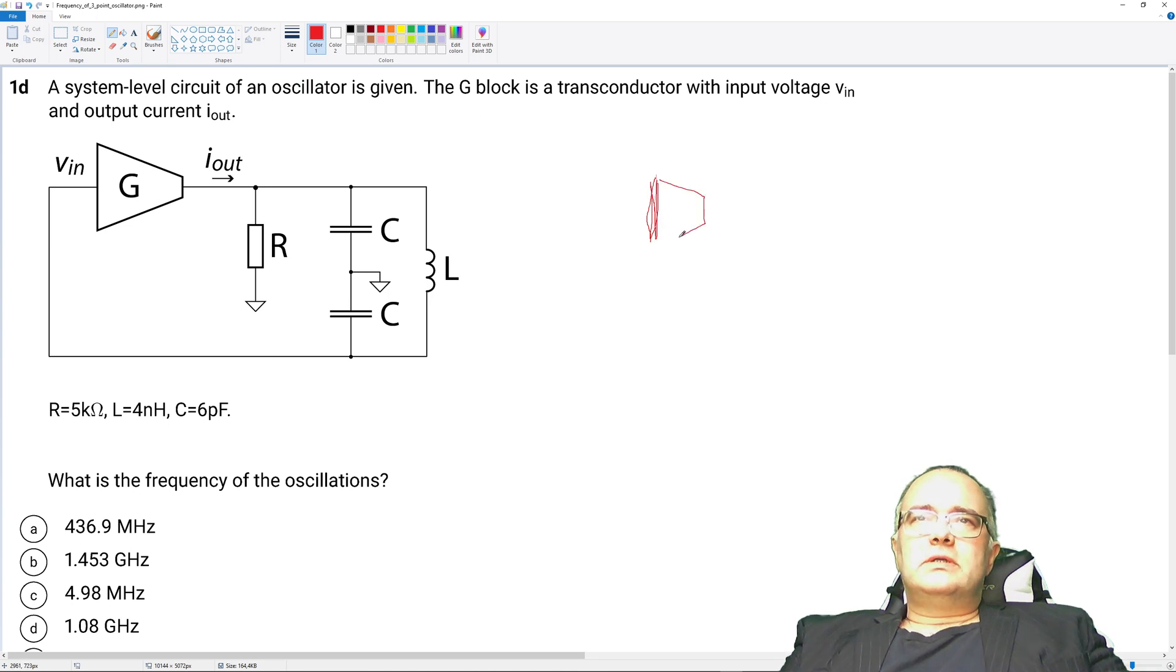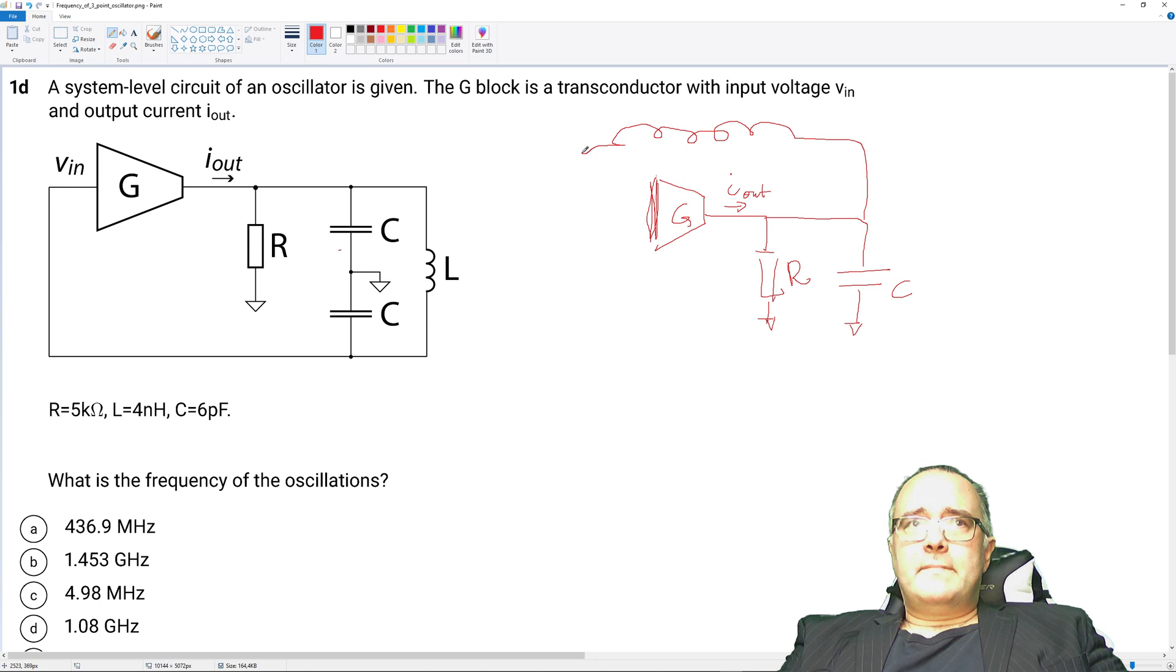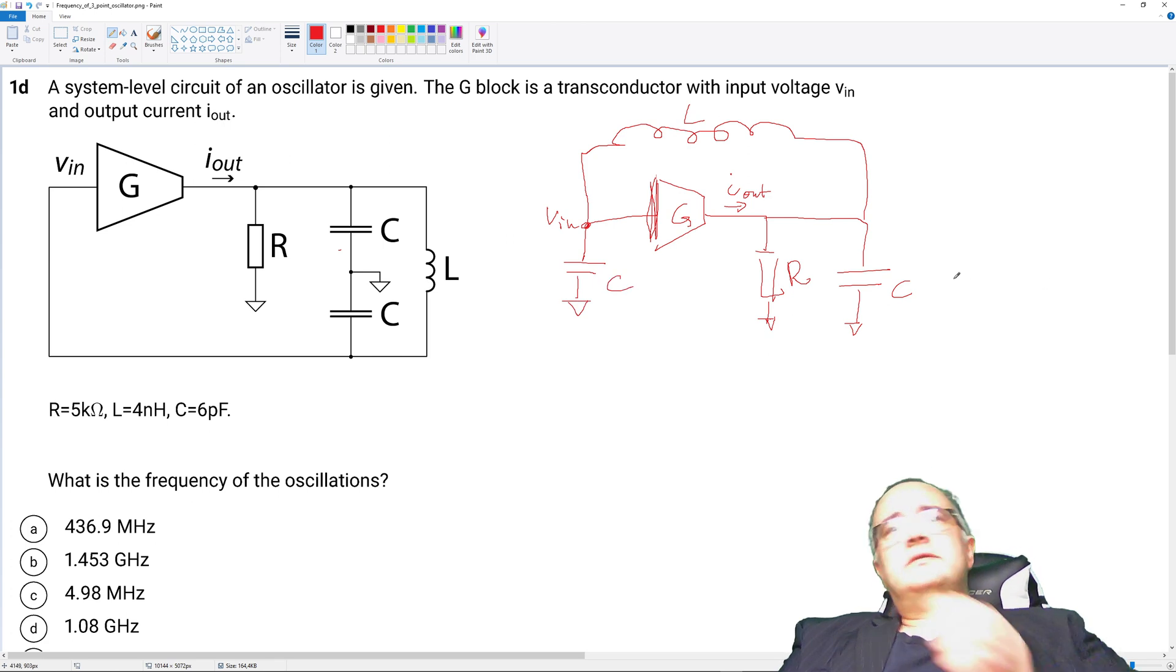So this is the transconductor G and then it's terminated to a resistor R. And this is the current I_out. Then we have one capacitor. Now this is this capacitor to ground. Then from the output to the input in the feedback we have an inductor. Like this. So this is inductance L. This will be the node V_in. And then from V_in to ground we have another capacitor. So effectively this is the circuit.